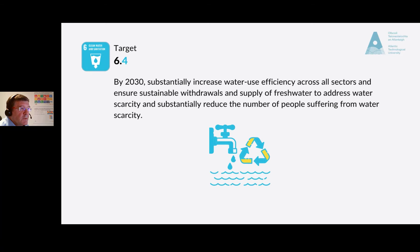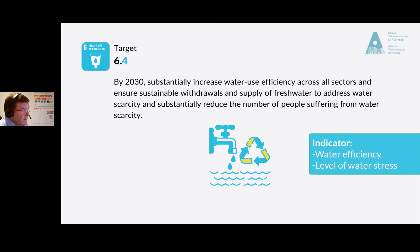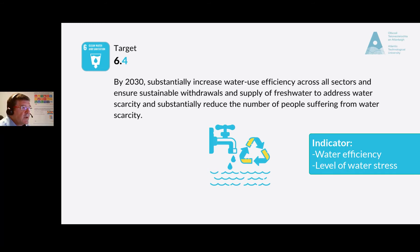Target 6.4: by 2030, substantially increase water use efficiency across all sectors and ensure sustainable withdrawals and supply of freshwater to address water scarcity, and substantially reduce the number of people suffering from water scarcity. The indicators for this are the change in water use efficiency over time and the level of water stress, particularly freshwater withdrawal as a proportion of available freshwater resources. We will look at statistics on how these goals are being progressed globally and nationally.